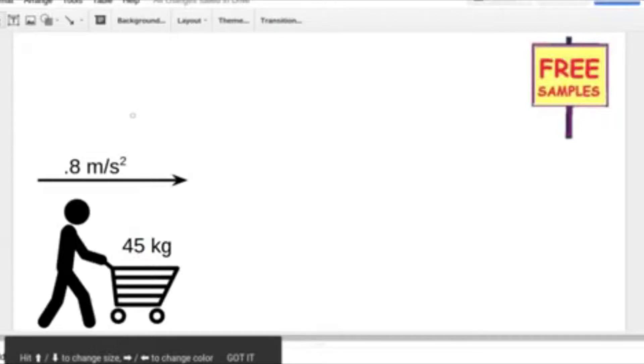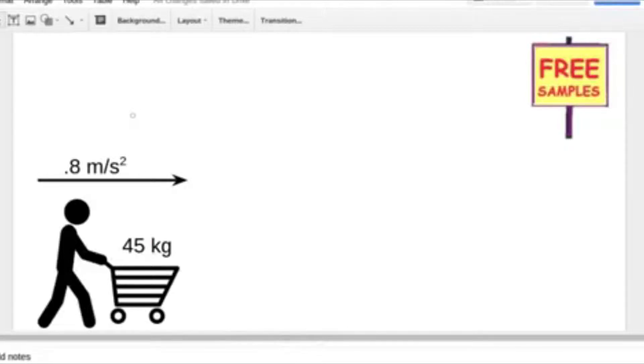A shopper pushes a full shopping cart with a mass of 45 kilograms. Starting from rest, she sees the last of the free samples and accelerates toward them at 0.8 meters per second squared. She did get the sample, but what was the force applied by her on the shopping cart if friction is ignored?